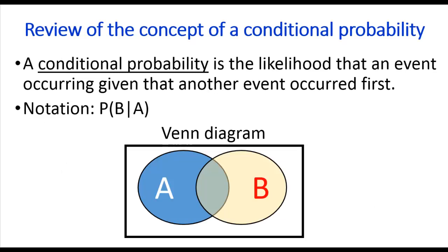A conditional probability is the likelihood that an event will occur given that another event has occurred first. Here's a Venn diagram. What is the likelihood you are in area B given that you are already in area A? The notation for conditional probabilities is the probability of event B occurring given that A has already occurred.